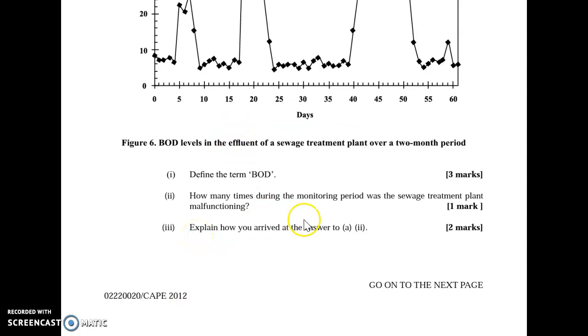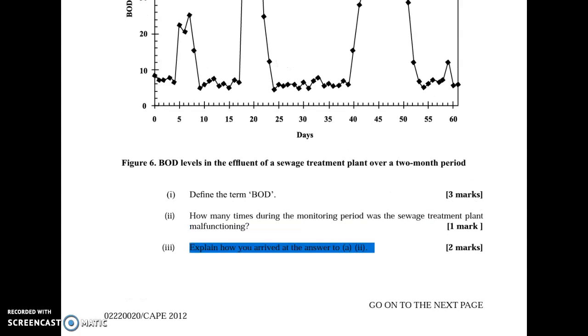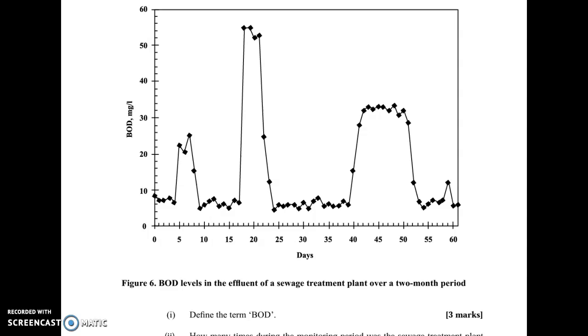For two marks, we have to explain how we arrived at the answer. A malfunction at a sewage treatment plant would mean that the demand for oxygen will be high. If the demand for oxygen is high, that means the actual supply of oxygen needed to break down the organic material is very low. The spikes in the BOD level would be significantly representative of the fact that there is insufficient or low quantities of dissolved oxygen needed by the organism to break down the nutrient content or organic material.